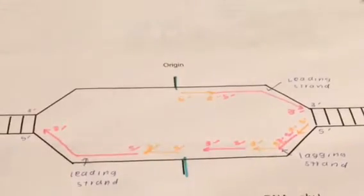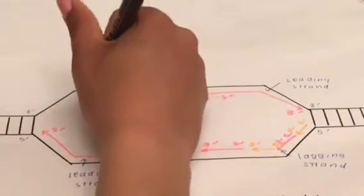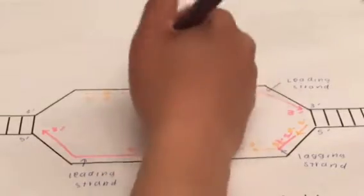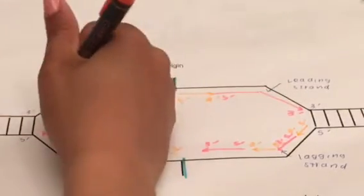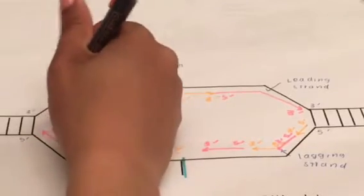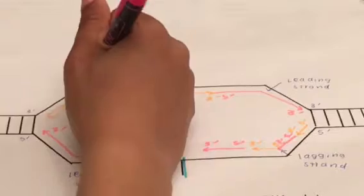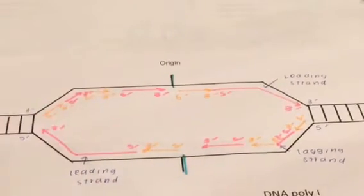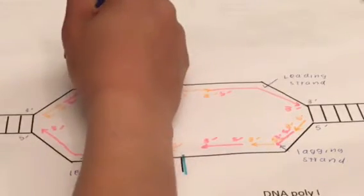On the opposite side, primer is added in the 5' to 3' direction. DNA polymerase synthesizes DNA in the 5' to 3' direction in parts again. And as you can see, it is backwards like earlier, and this happens again along this entire side of the strand. Now this is the lagging strand.